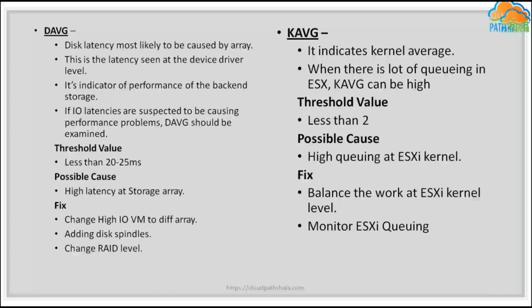KAVG represents commands sent through the VM kernel — read or write commands — that are queued up at the kernel level. The plugins at both the array and ESXi levels understand these commands. If there is high queuing of ESXi kernel commands, you need to deal with it at the ESXi layer, not the storage end. For storage issues, look at DAVG; for VM kernel issues, look at KAVG. KAVG should be less than 2 milliseconds.